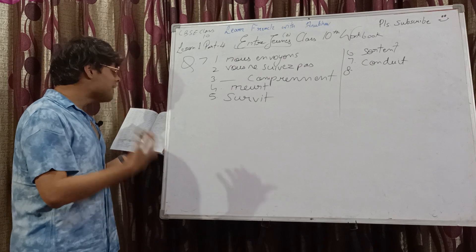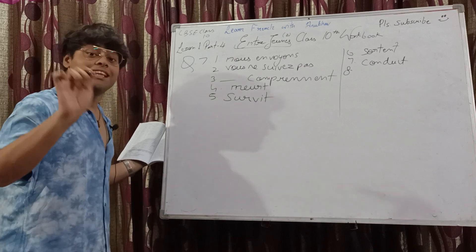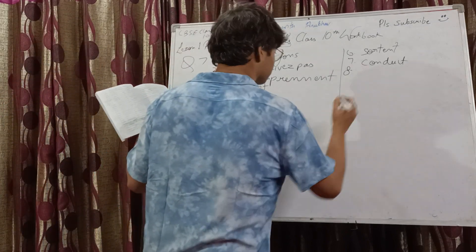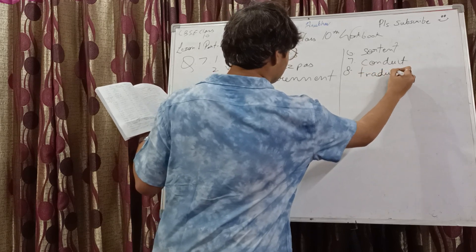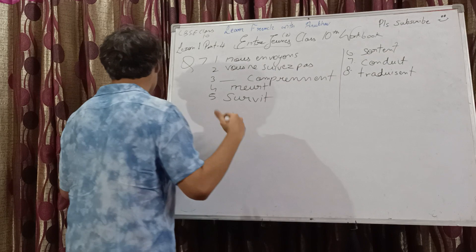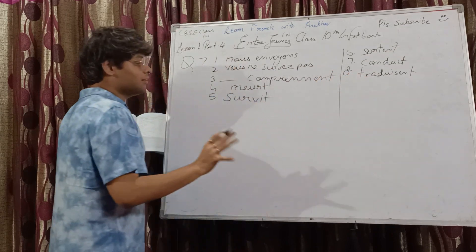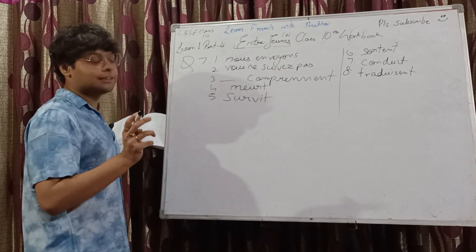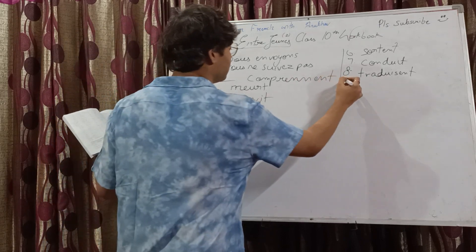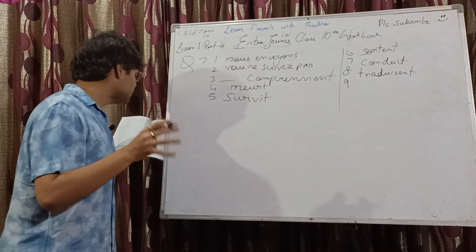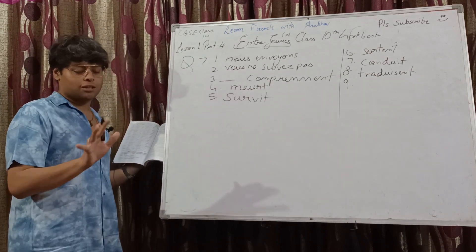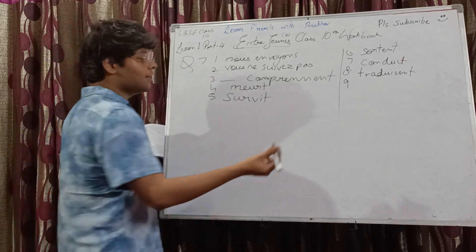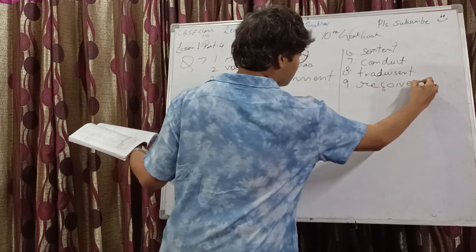Eighth: ils ___ la leçon en anglais — they translate the lesson into English — traduit. We couldn't have used traduire in the third part as it wouldn't have made much sense there. So here we use traduire — ils traduisent. Ninth: ___ ils les cadeaux? It's an inversion — did they receive the gifts? Third person plural — les reçoivent-ils?